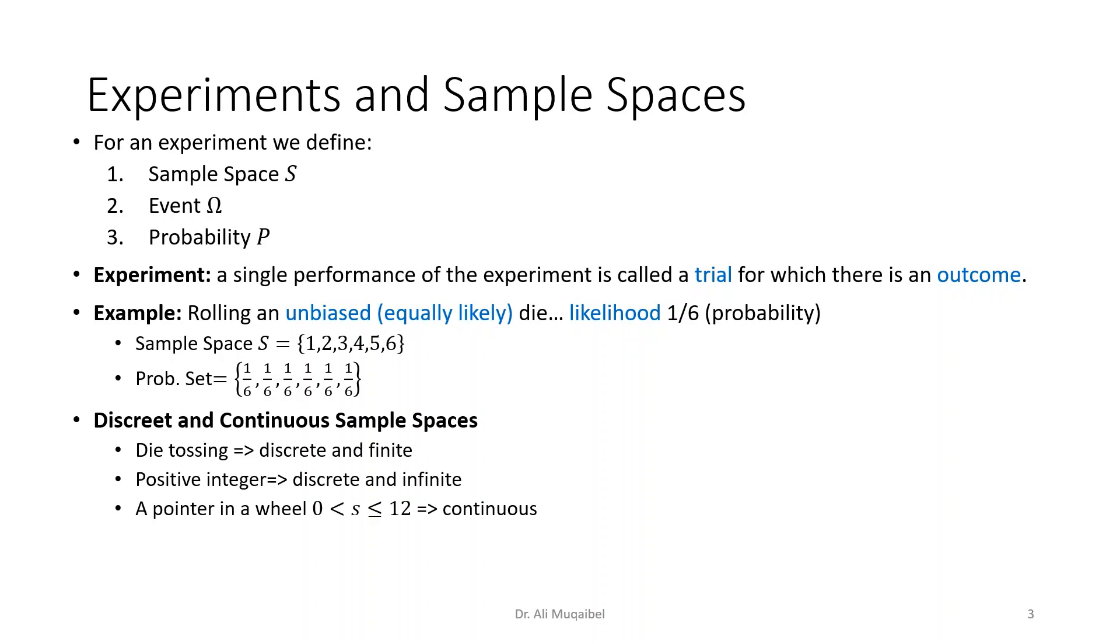If you pick a positive integer, you get a discrete outcome but the number of possibilities are infinite. And the last example: if we have a pointer in a wheel where you rotate the wheel, let's say it's numbered from zero to twelve like a clock, it's a continuous scenario, then the outcome is continuous. So possible outcomes of an experiment could be discrete or continuous.